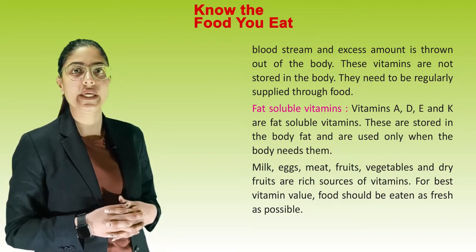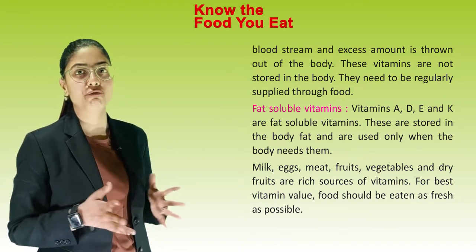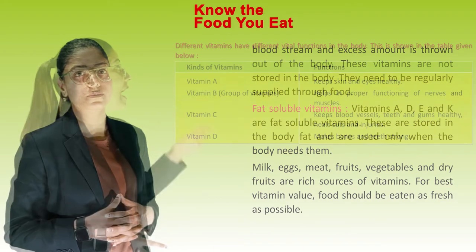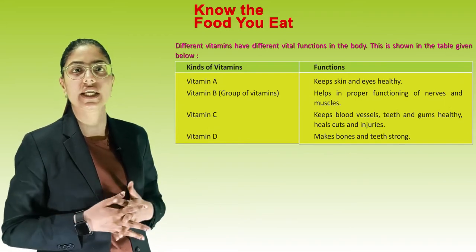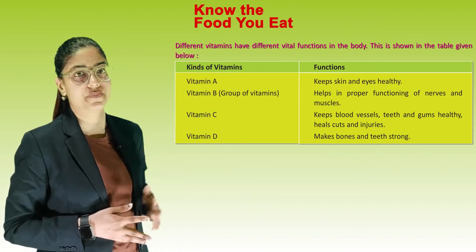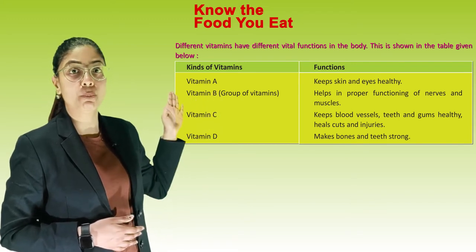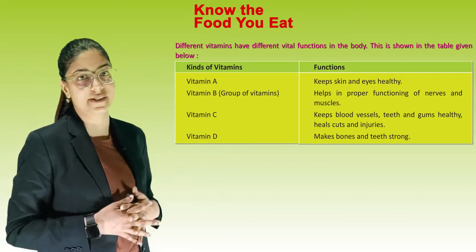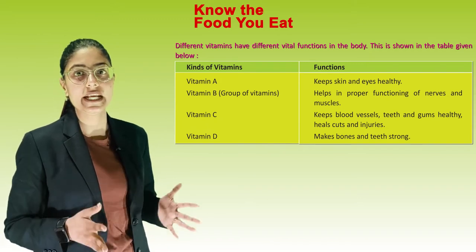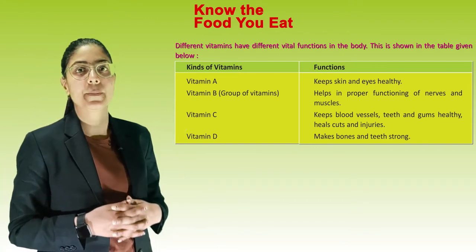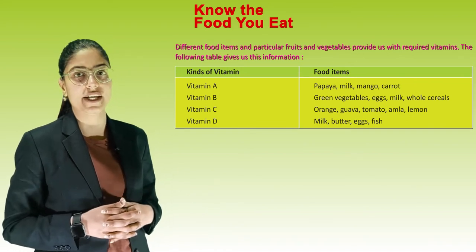Milk, eggs, meat, fruits, vegetables and dry fruits are rich sources of vitamins. For best vitamin value, food should be eaten as fresh as possible. Different vitamins have different vital functions in the body. Vitamin A keeps skin and eyes healthy. Vitamin B group of vitamins help in the proper functioning of nerves and muscles. Vitamin C keeps blood vessels, teeth and gums healthy, and heals cuts and injuries. Vitamin D makes bones and teeth strong.